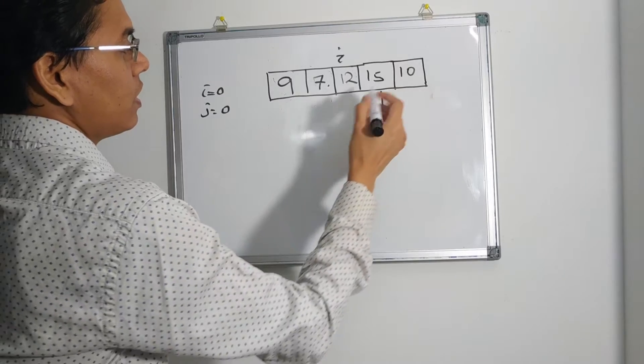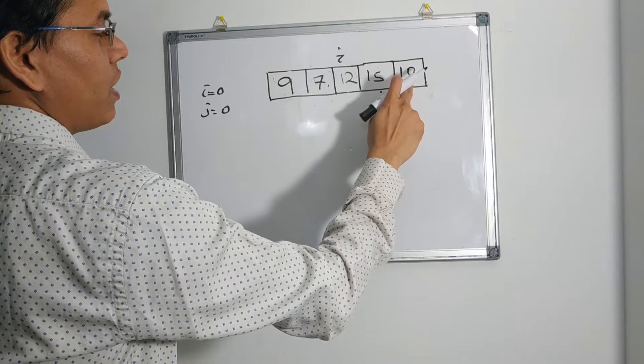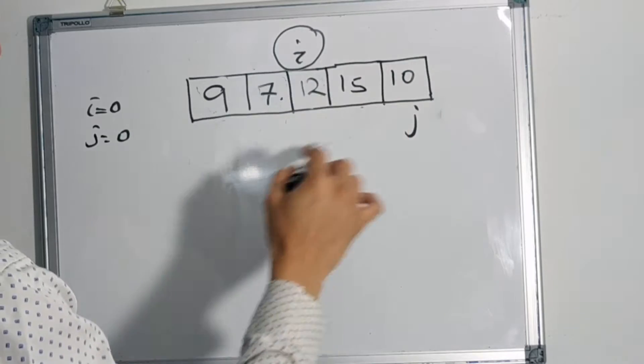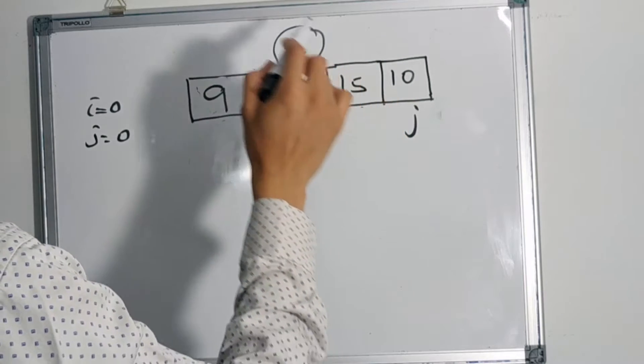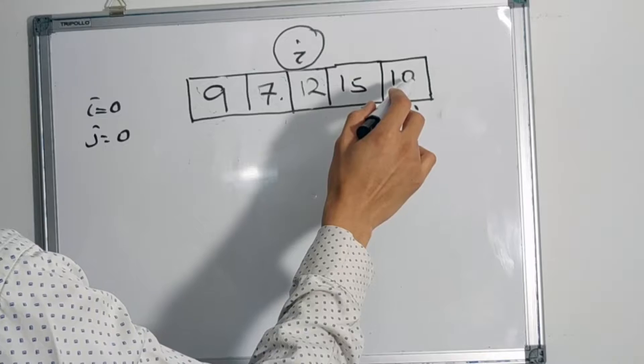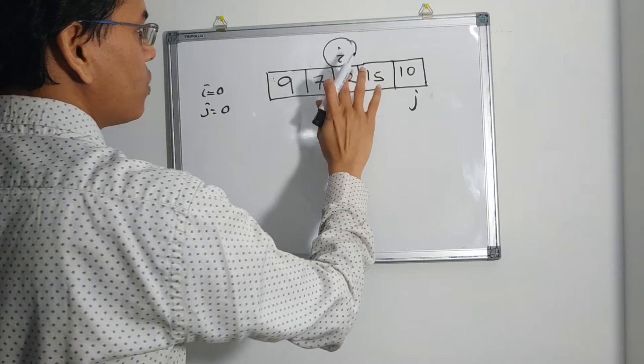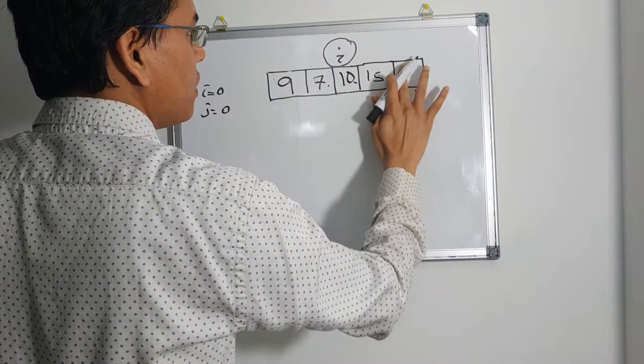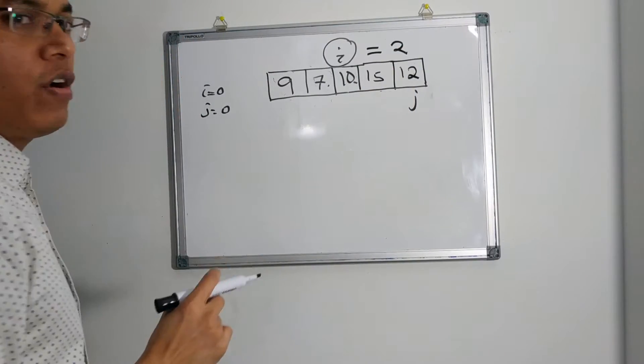Now 15 is not less than or equal to 10. We will still move j to the next index. Once the scanning is over, we found the final index of 10. So we will swap this 10 to this place. So finally this will be 10 and this will be 12. And we will return i equals 2.